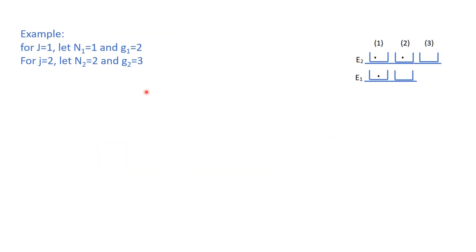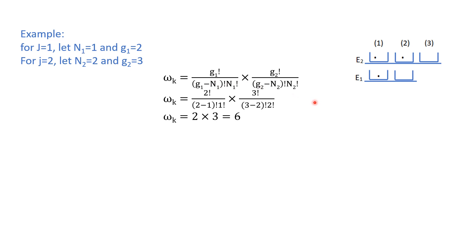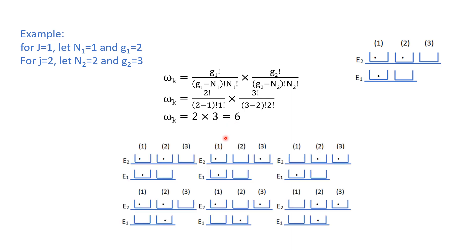Just like we considered an example of a system having two energy levels: the first energy level consists of one particle with two energy states, and the second energy level consists of two particles with three energy states. According to the formula from the previous page, what is the thermodynamic probability of this system? You multiply the thermodynamic probability of the first level with that of the second. With g1 equal to 2, n1 equal to 1, g2 equal to 3, and n2 equal to 2, after simplification you get 6.